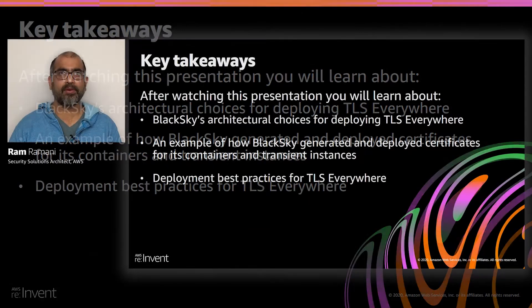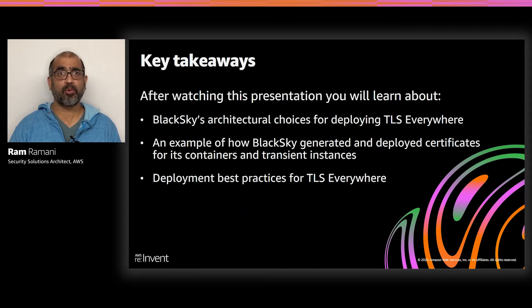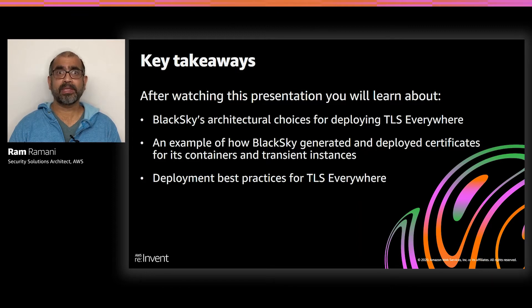So, what are the key takeaways that you'll get out of this presentation? Number one, insight into the design choices made by BlackSky's security team for managing their PKI infrastructure to achieve TLS everywhere. Number two, Kevin from BlackSky will share in detail the methods BlackSky used to automate certificate availability and rotation for their containers and EC2 instances. Number three, Josh will present deployment best practices and recommendations based on usage patterns that we have learned from BlackSky and other customers. Next, I'm going to hand off to Kevin from BlackSky to talk to us about their BlackSky TLS Everywhere initiative. Kevin, off to you.